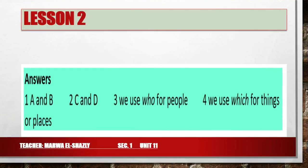Number 1: The answer is A and B. Number 2: C and D. Number 3: We use 'who' for people. Number 4: We use 'which' for things or places.